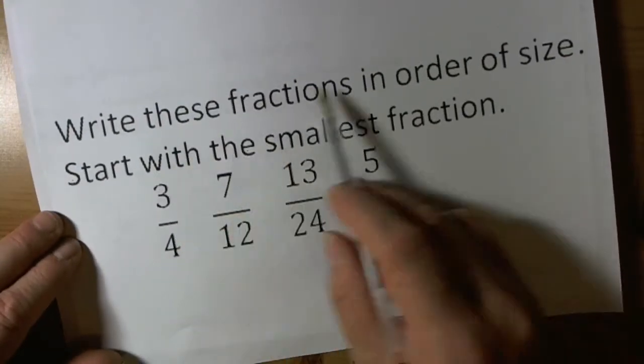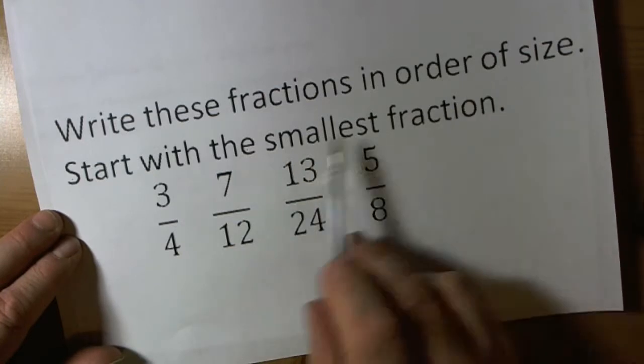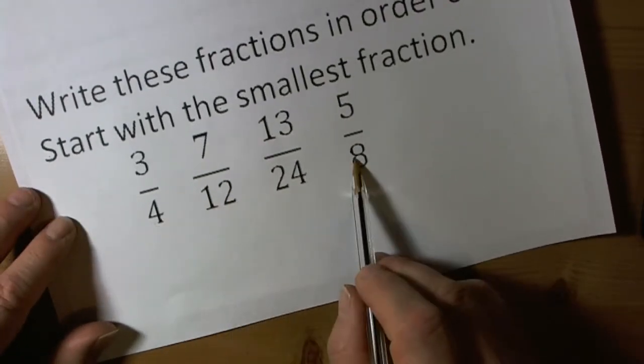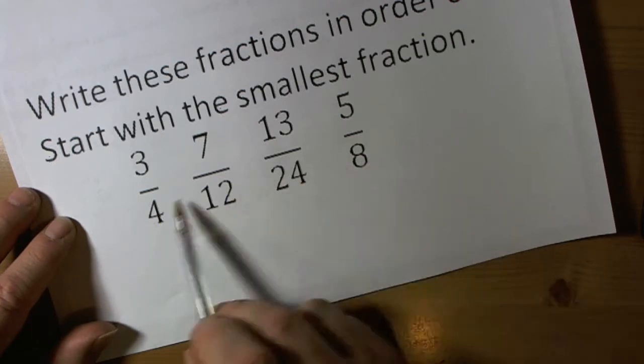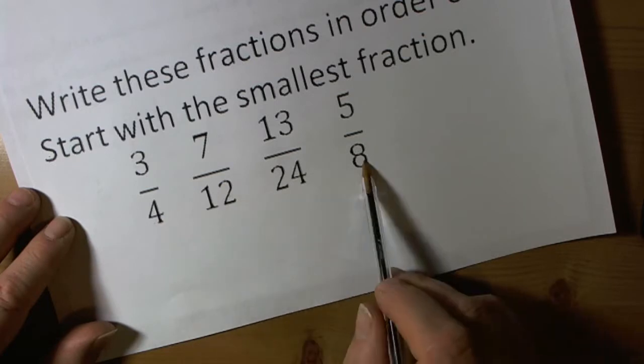Also with fractions, we could be asked to write fractions in order of size. So again, if we look at this, we've got to compare quarters with twelfths, with twenty-fourths, with eighths. Not easy, so it's easier to turn them into a common denominator.